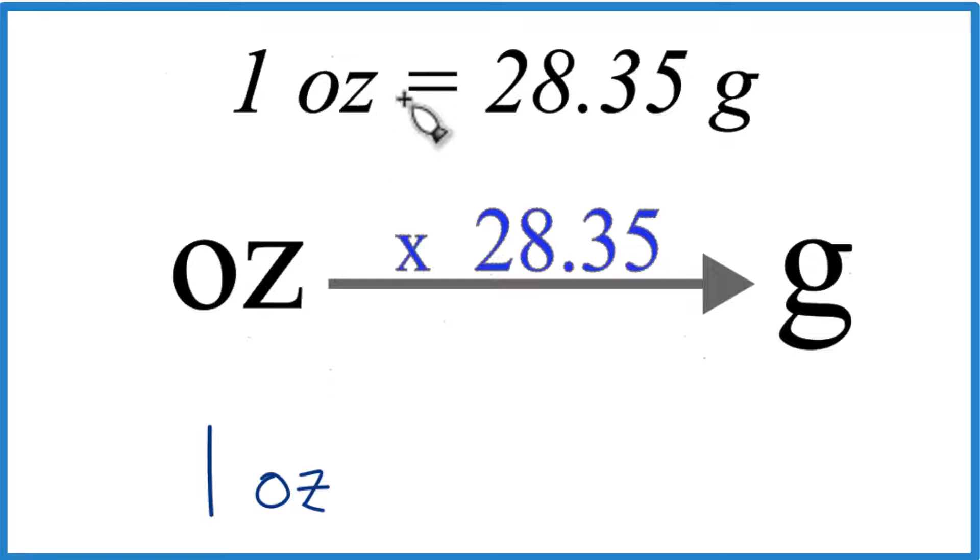When we think about ounces and grams, one ounce is equal to 28.35 grams. This is rounded just a little bit, but 28.35 grams in one ounce.